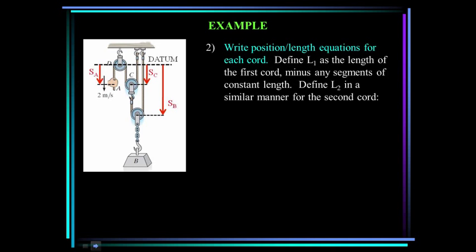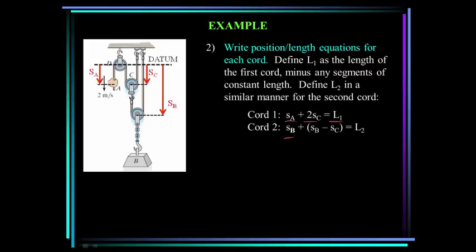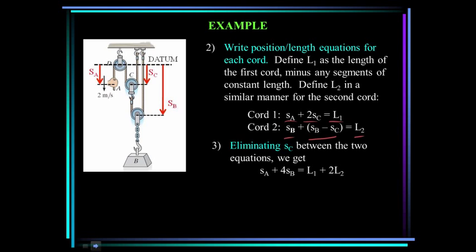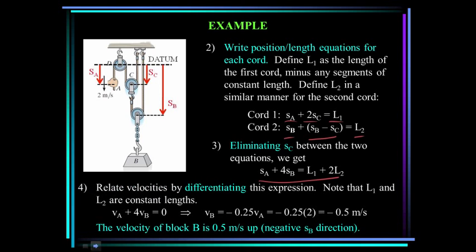Write the position-length equation for each cord. Define L1 as the length of the first cord minus any segments of constant length, and L2 similarly for the second cord. Chord 1: SA plus 2SC equals L1. Chord 2: SB plus SB-C equals L2. Eliminating SC between the two equations gives SA plus 4SB equals L1 plus 2L2. Since L1 and L2 are constant, their derivatives are zero. Taking the time derivative, the velocity of B equals negative one-fourth the velocity of A, so the velocity of B equals minus 0.5 meters per second. The negative sign indicates the velocity of block B is upwards.